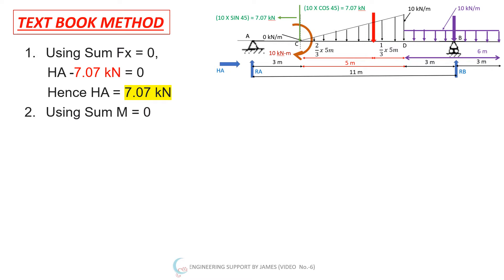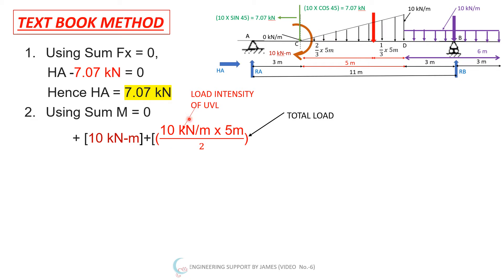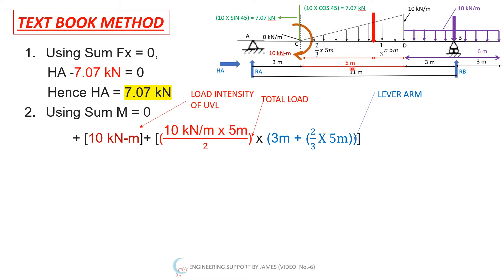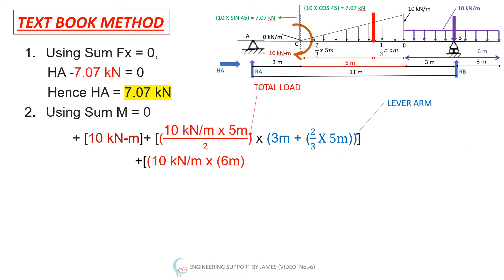Next, taking moments at A equal to zero. The concentrated moment of 10 kN·m at C is positive. The triangular load: 10 kN/m × 5/2 (total load) multiplied by the lever arm of 3 m plus two-thirds of 5 m (since the resultant acts at two-thirds of the length from the zero-intensity end). Then the UDL: 10 kN/m × 6 m multiplied by its lever arm of (3 + 5 + 3 + 3)/2.